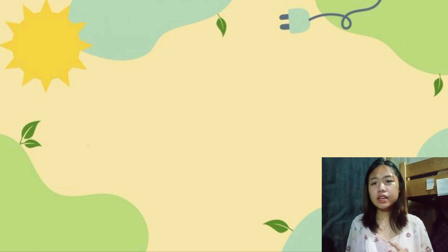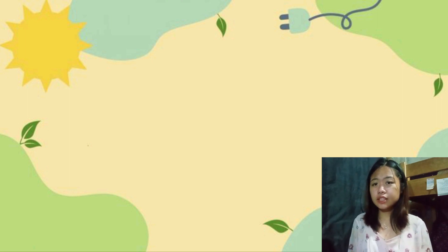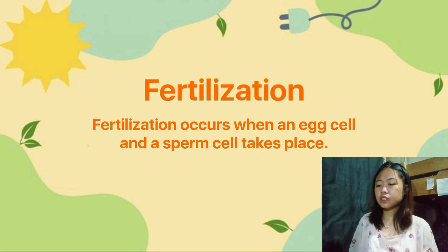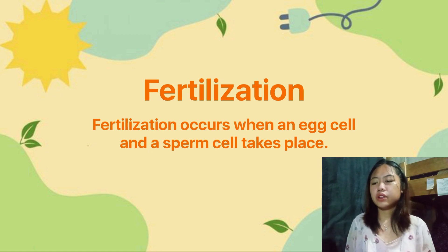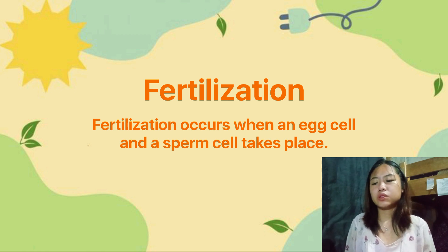Let's clarify what fertilization is. Fertilization occurs when an egg cell, or the ovum, which is produced only by a female organism, and a sperm cell, which is also produced by a male organism, takes place.